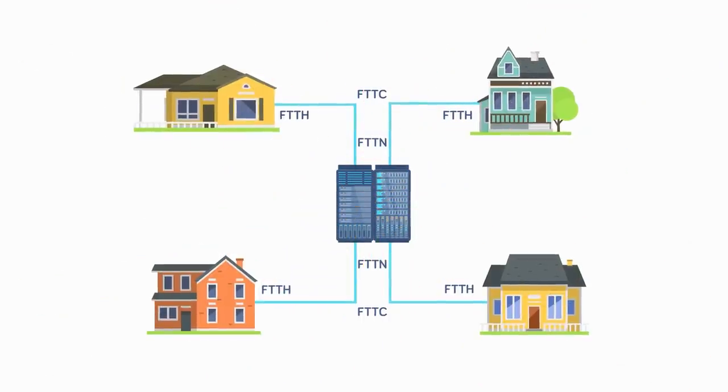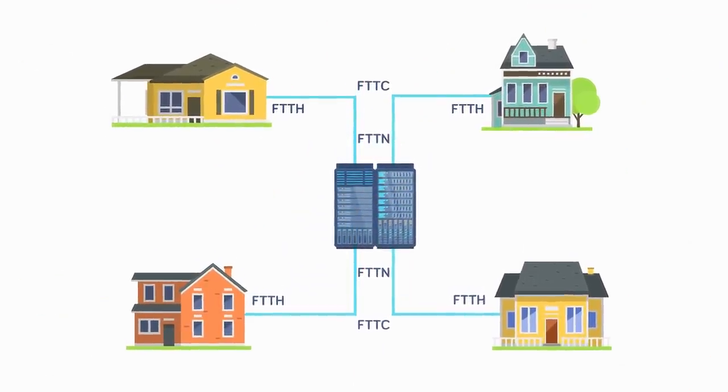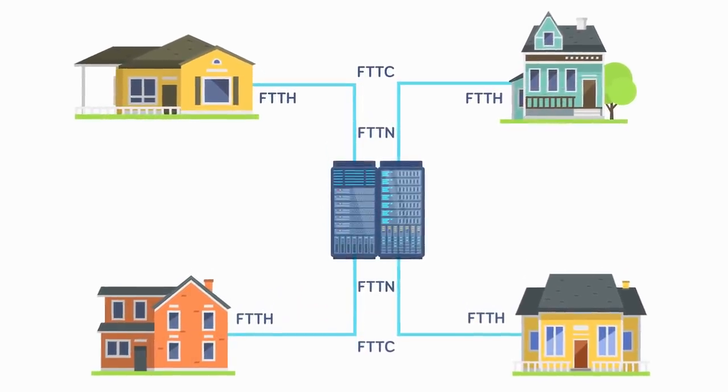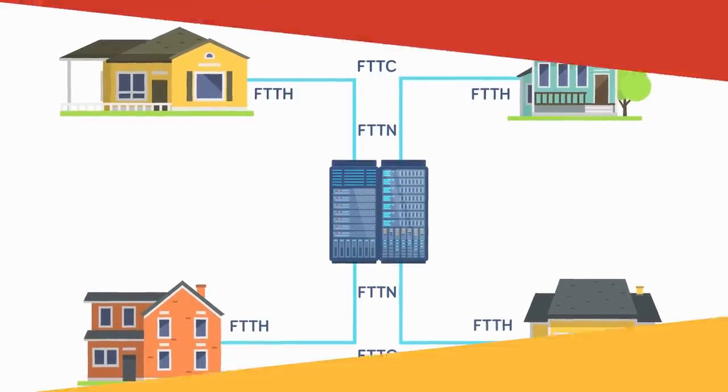ISPs use a number of modern network technologies to handle congestion in real time, often letting them intelligently and automatically deprioritize the traffic of heavy users in overburdened areas as needed.